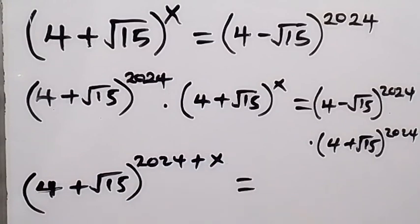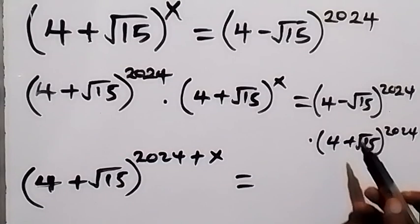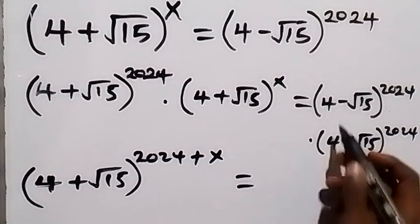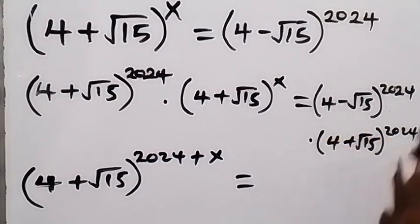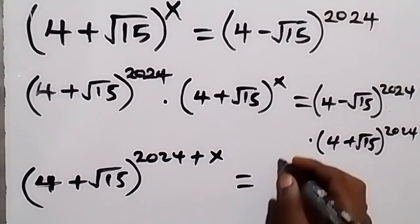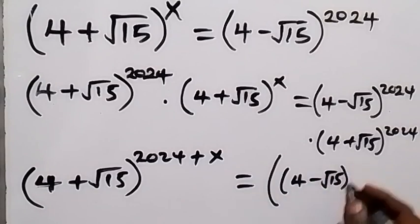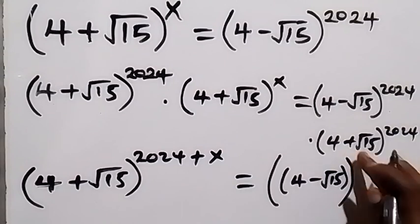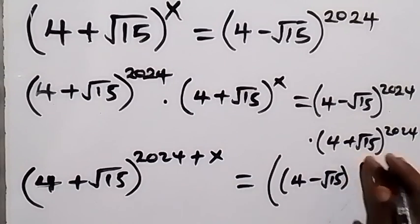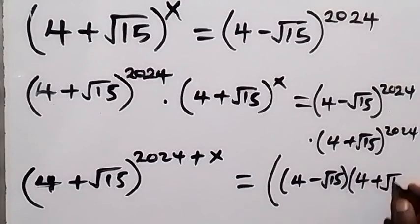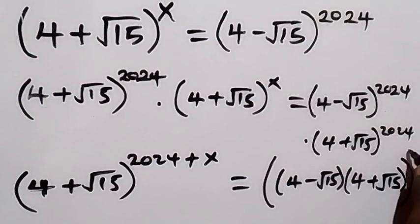On the right-hand side, the bases are not the same but the powers are the same, so we can write the two bases together and raise them to that power — from the law of indices. So we have, in brackets, 4 minus root 15, times 4 plus root 15, all raised to power 2024.